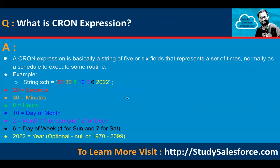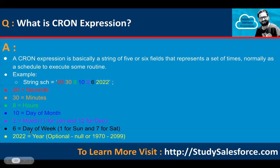What is a cron expression? A cron expression is a string of five or six fields that represents a set of times, normally used as a schedule to execute some routine. For example: seconds, minutes, hours, day of month, month (1 for January, etc.), day of week (1 for Sunday, etc.), and an optional year field. The year field is optional — you can use null or specify a range.